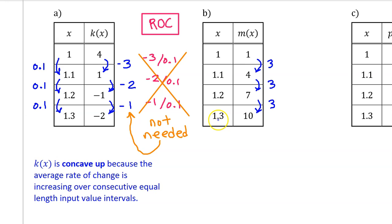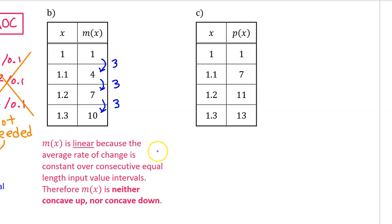For part b, we have the same input values as before, so we still have consecutive equal length input value intervals. But this time, the output values are increasing by 3 each time. This tells us that the rate of change is constant over consecutive equal length input value intervals. We can see that just by looking at the change in output value. m of x is linear because the average rate of change is constant over equal length input value intervals. Therefore, m of x is neither concave up nor concave down.